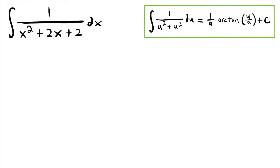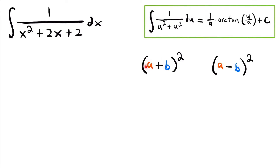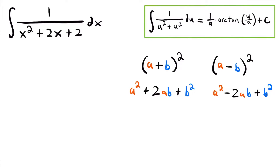What do we mean by completing the square? Well, if a quadratic function is a perfect square, it can be written in two ways: the quantity (a + b) squared, or the quantity (a - b) squared. If we expand these two expressions, we find they are equal to a² + 2ab + b², and a² - 2ab + b² respectively. These forms are perfect squares because they can be factored into a quantity squared.